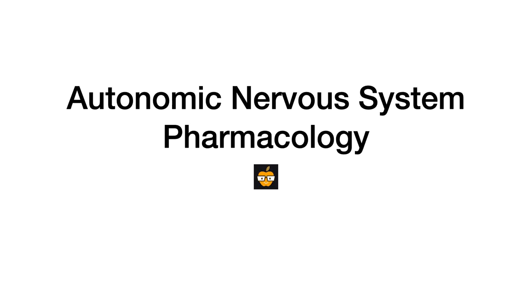In this video I'm going to be talking about the autonomic nervous system with a special emphasis on autonomic nervous system pharmacology. Although the focus will be on all of the different drugs you need to know regarding the autonomic nervous system, I'm still going to touch on things like the different types of receptors and general physiology to help you establish the background information needed to really master the pharmacology.